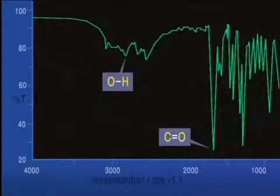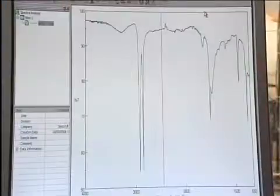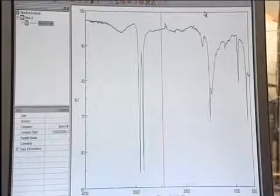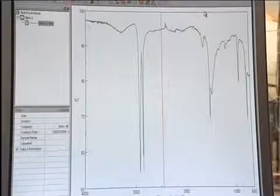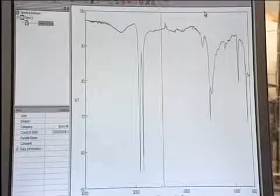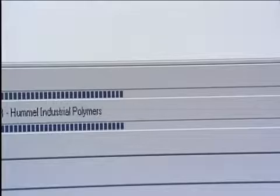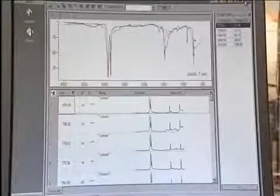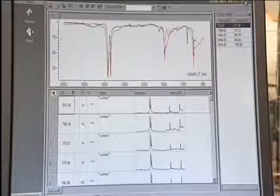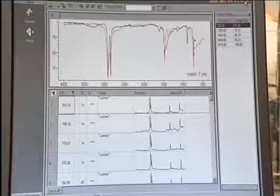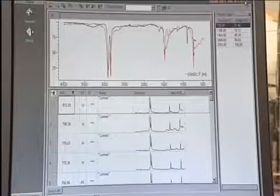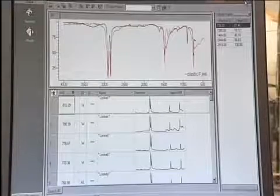An unknown sample may be identified by matching its IR spectrum with a database of spectra of known compounds, particularly in the region of the spectrum below about 1500 centimeters to the minus one. The peaks in this area are due to complex vibrations of the whole molecule, and the area is referred to as the fingerprint region, because it is unique for a particular compound.